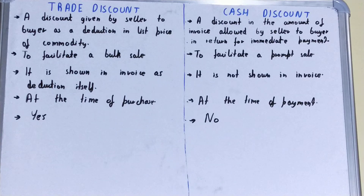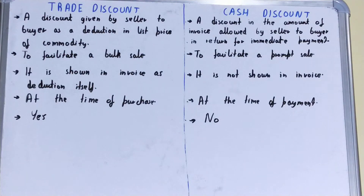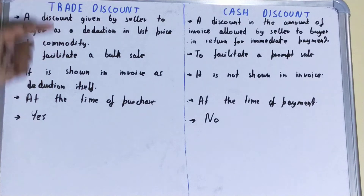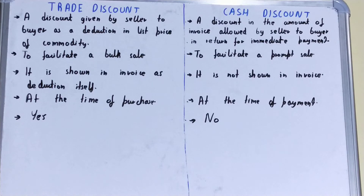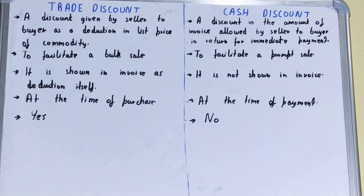Next, if we talk about the purpose: the purpose of trade discount is to facilitate bulk sales — that is, a multiple amount of sales. But in the case of cash discount, it is to facilitate a prompt or immediate sale of the product.